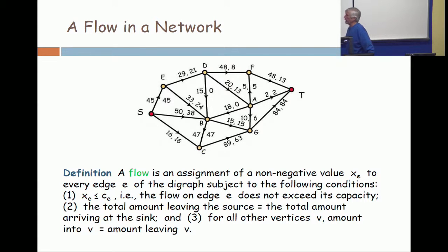Some of these are pretty easy. If you look at F, for example, in the upper right corner, F has 13 in and 13 out. Are you all satisfied that the conservation law holds at every vertex here?